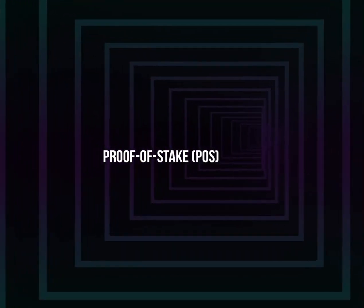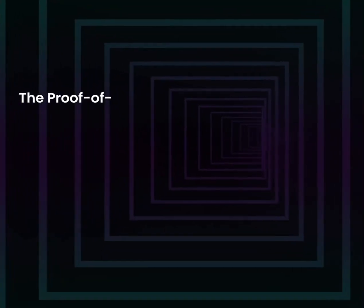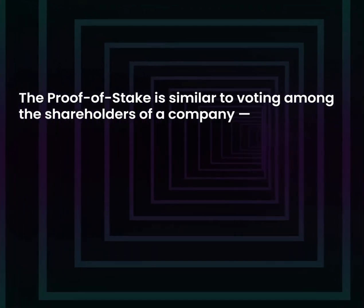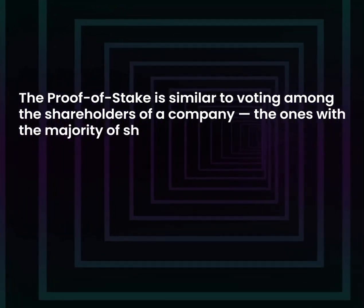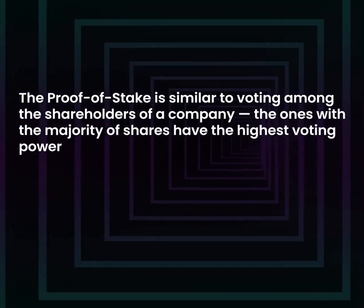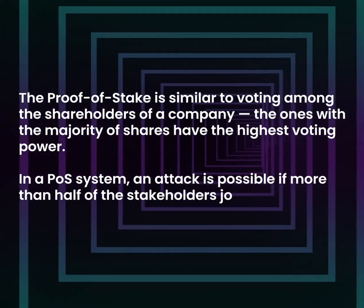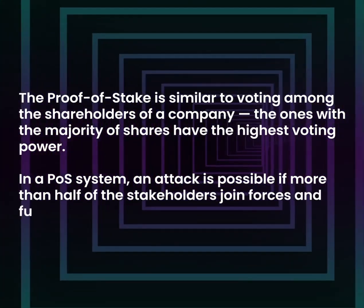Proof of Stake, or POS. The proof of stake is similar to voting among the shareholders of a company — the ones with the majority of shares have the highest voting power. In a POS system, an attack is possible if more than half of the stakeholders join forces and funds.